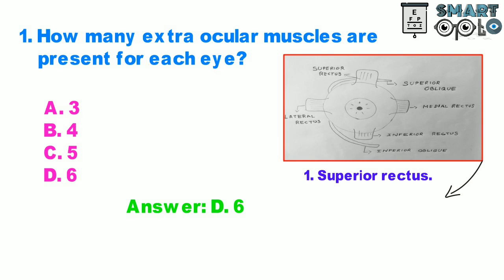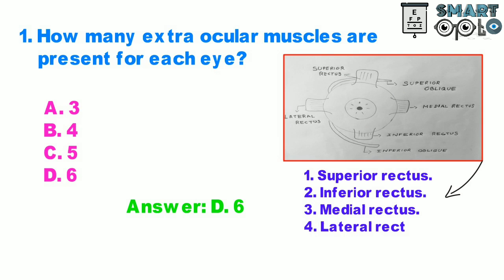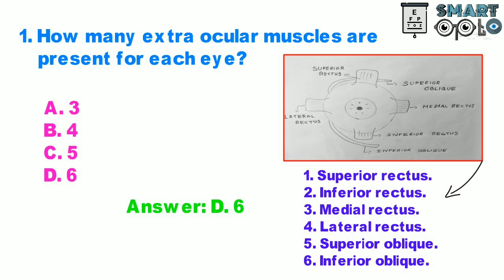The answer is 6. The six extraocular muscles are: 1. Superior rectus, 2. Inferior rectus, 3. Medial rectus, 4. Lateral rectus, 5. Superior oblique, 6. Inferior oblique.